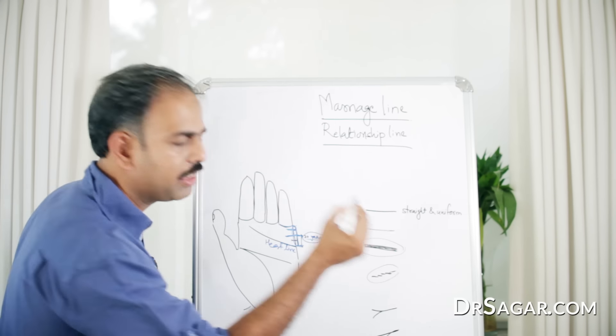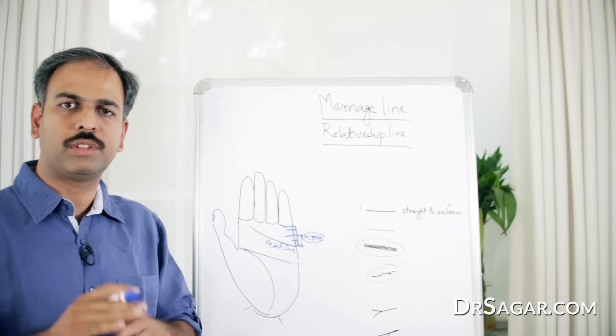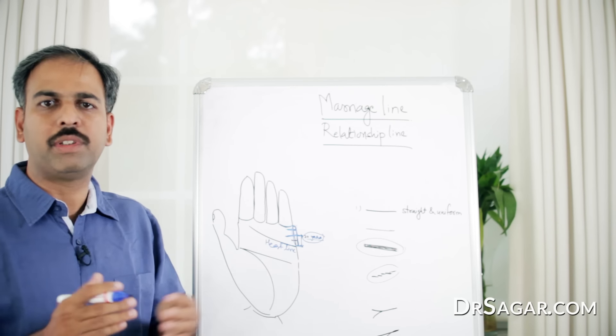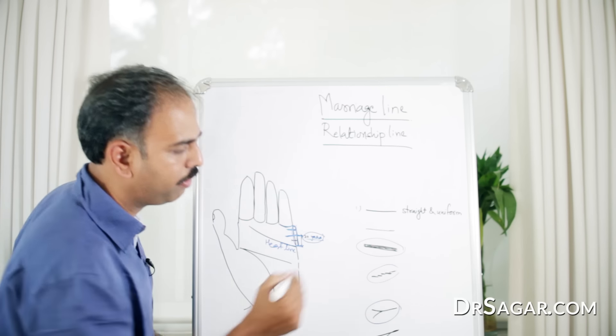If it's like a chain, then it's like some days it goes with better and some days it goes with worse between two partners. A lot of people have this kind of line.